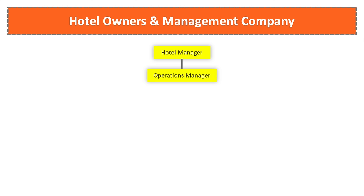The second person in command is the operations manager. He covers the entire hotel operations to make sure everything is up and running. He reports directly to the hotel manager and assists him in running the property when the hotel manager is on a business trip or on holidays.